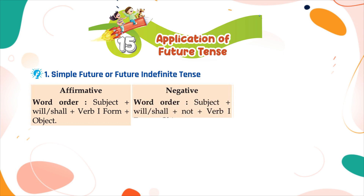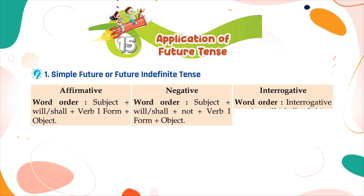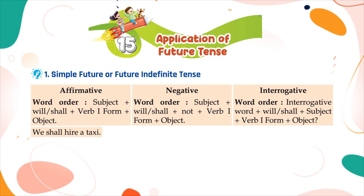Negative word order: subject plus will or shall plus not plus verb first form plus object. Interrogative word order: interrogative word plus will or shall plus subject plus verb first form plus object, question mark.